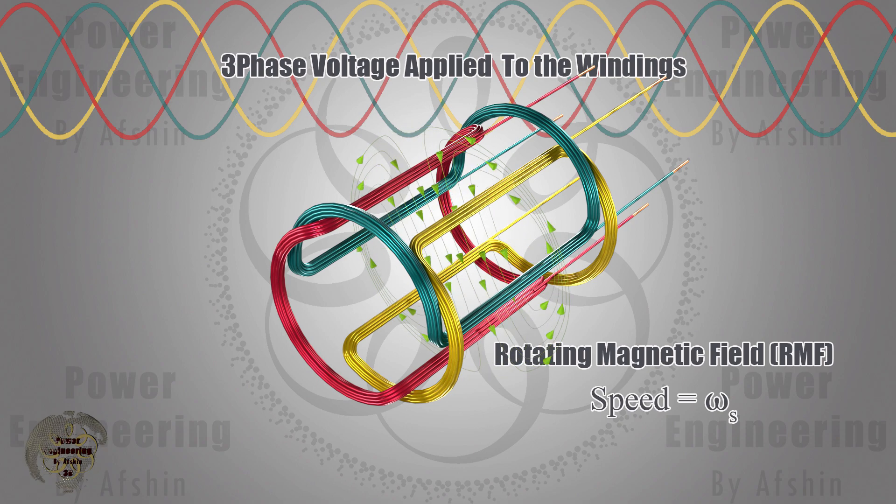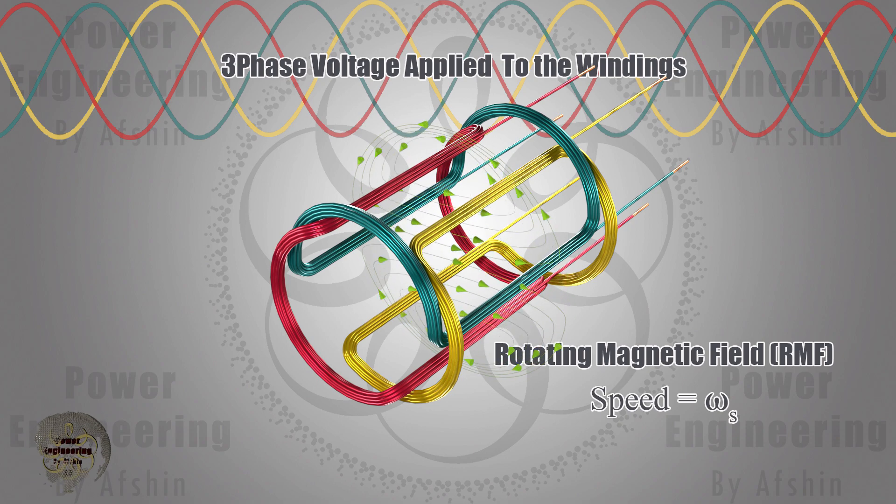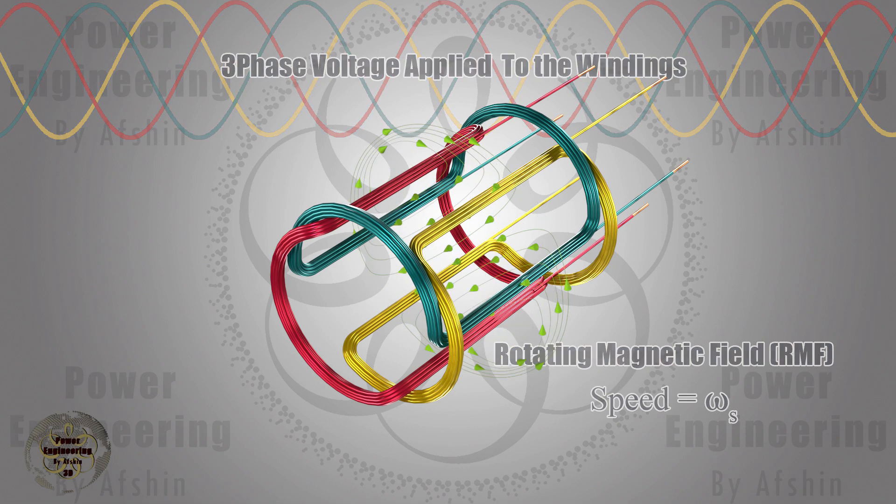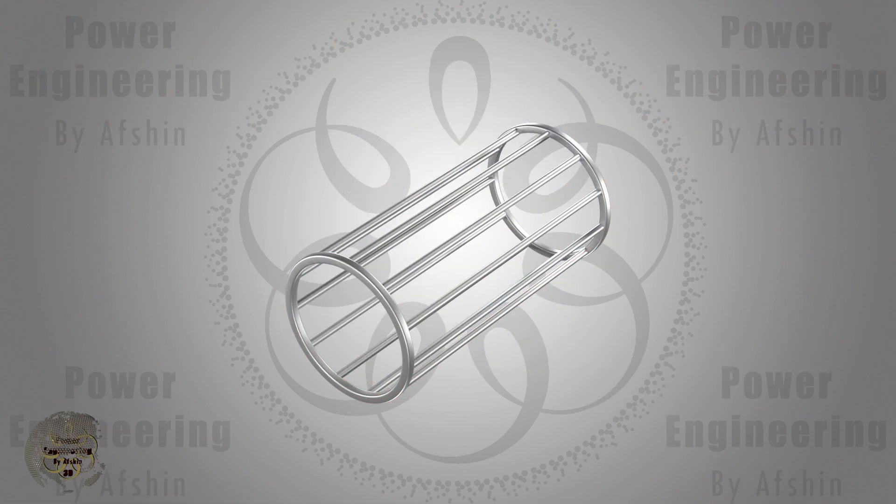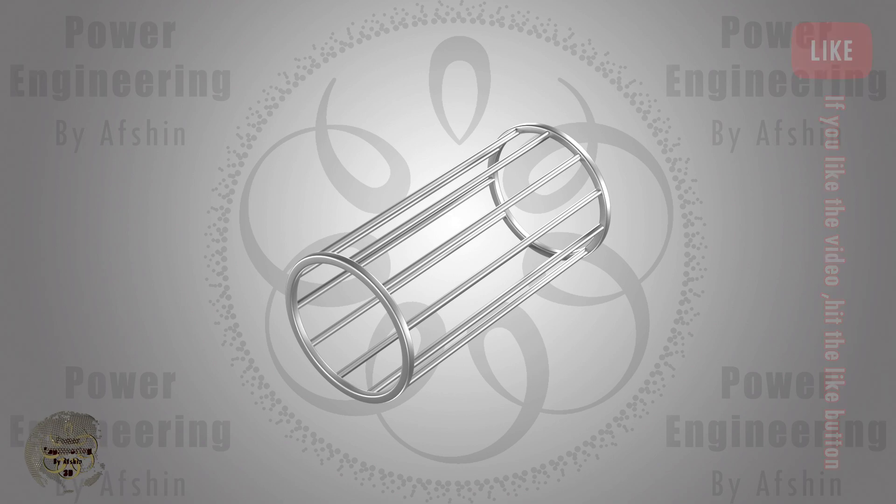Now, we place the rotor inside the stator. For better visualization of field lines and currents, we'll make the stator invisible. Here, we assume the rotor is squirrel cage type, though the same principles applies to wound rotors.